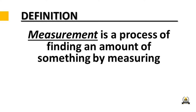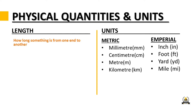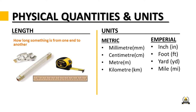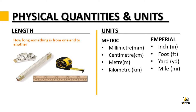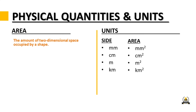When we talk about physical quantity, we mean things like length — how long something is from one end to another. The units for length in the metric system are millimeter, centimeter, meter, and kilometer. In the imperial system, used in America, we have inch, foot, yard, and mile.